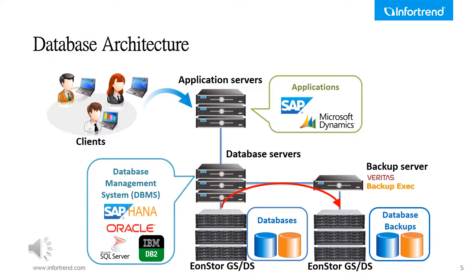This slide shows the database system's general topology. Let's say this flow depicts a banking system. On the left side, a client needs to withdraw money from their account, so they go to the bank's ATM. The ATM is the application server, with specific application software installed — such as SAP HANA or Microsoft Dynamics — so the client can withdraw money. The ATM accesses the DBMS server to look up the client's account data, modify the balance, and generate a transaction record. The DBMS server then connects to storage to keep all the database system's data, and there is usually an additional backup server ensuring continuity of service.